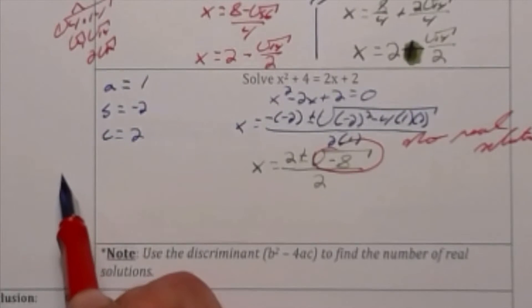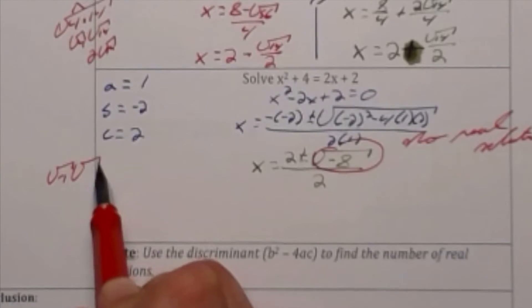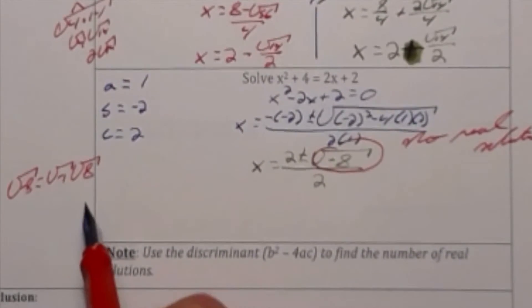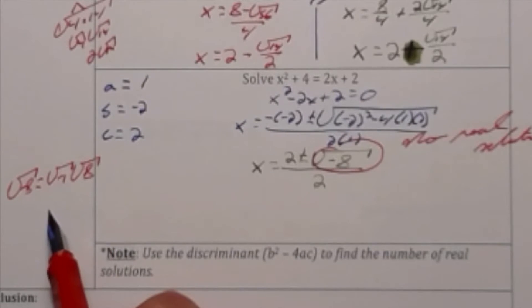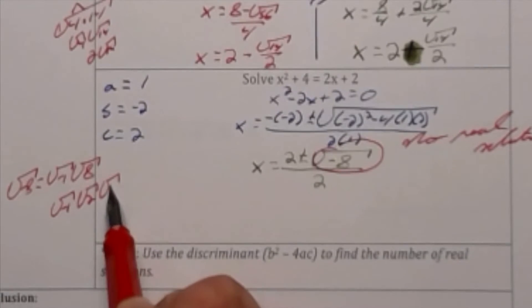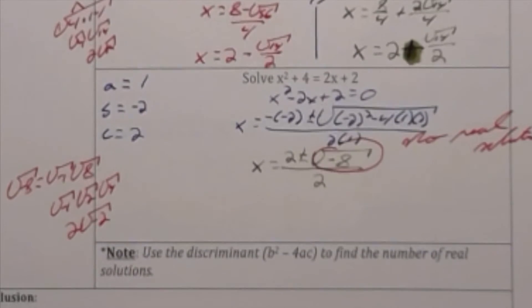Let's simplify radical negative 8. That is the same as radical negative 1 times radical 8, or radical negative 1 times radical 2 times radical 4. And the square root of 4 is 2. So I'm going to go ahead and multiply the two radicals that are left giving me 2 radical negative 2 as a simplified form for my negative 8.